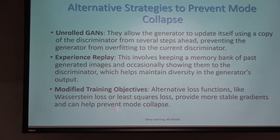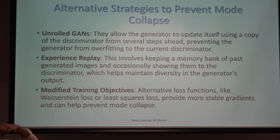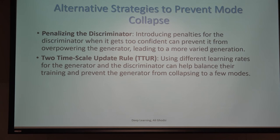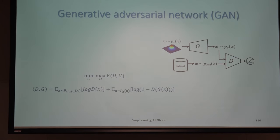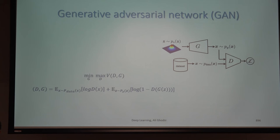There are many techniques to address mode collapse — mini-batch discrimination is one. Another is experience replay, similar to what we used in reinforcement learning policy gradients: buffer some past examples and feed them back to the model so it doesn't forget. There is a list of methods available for reference.